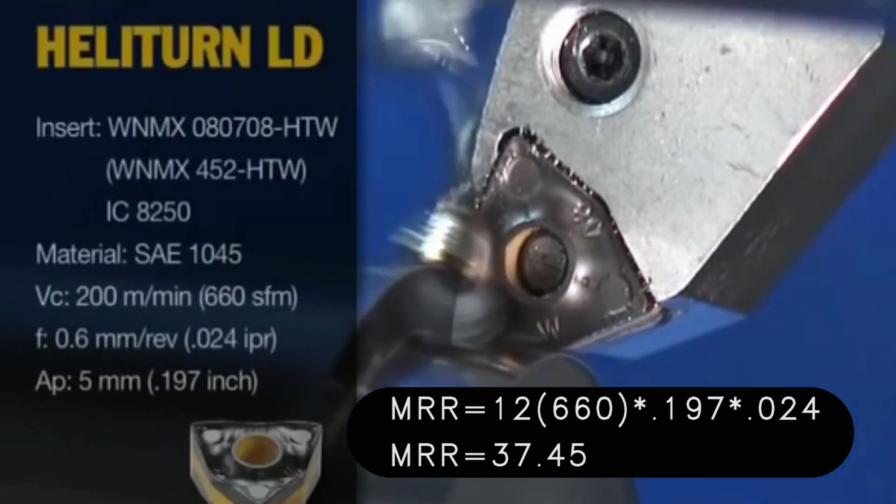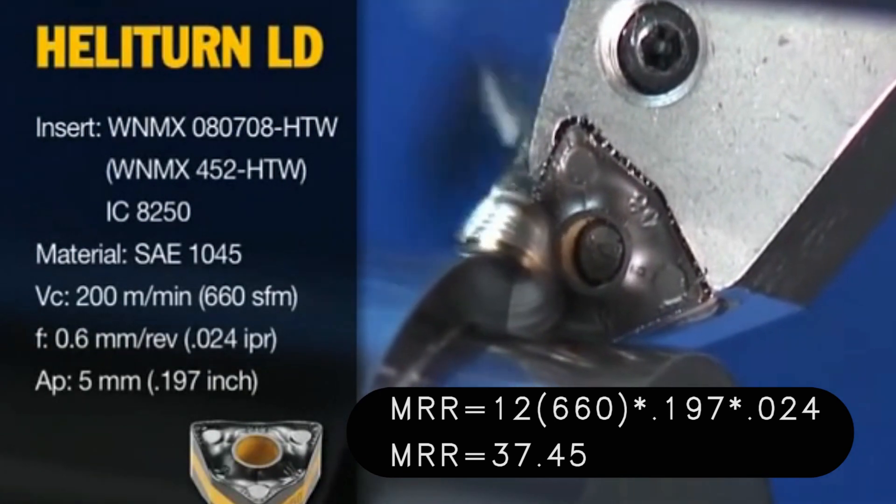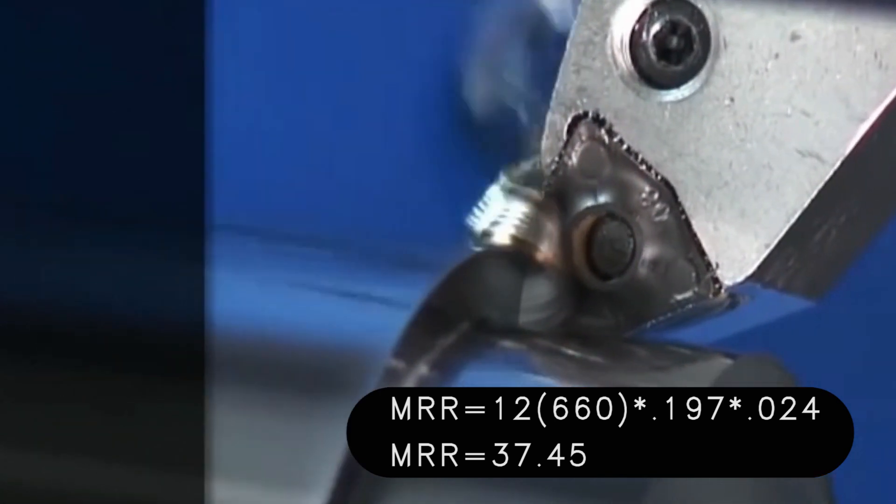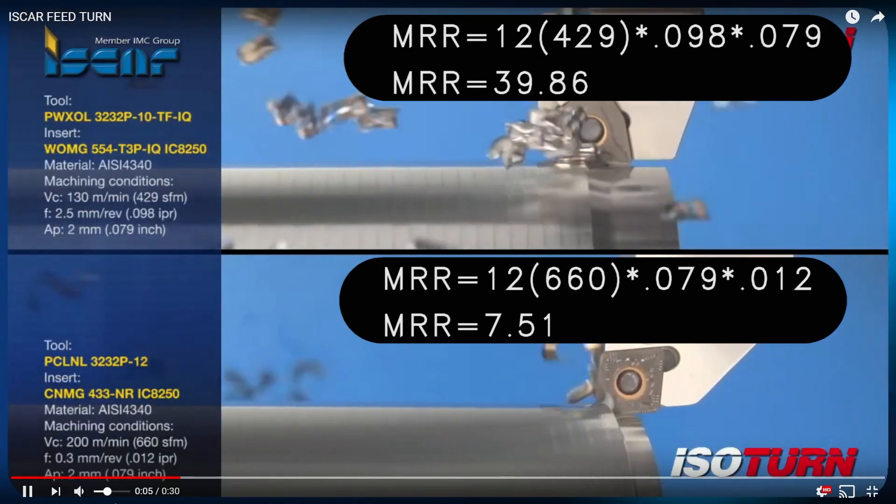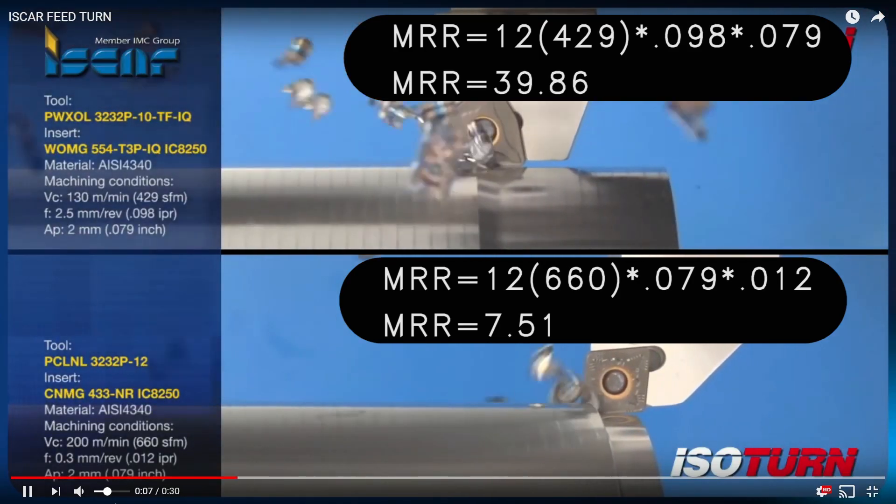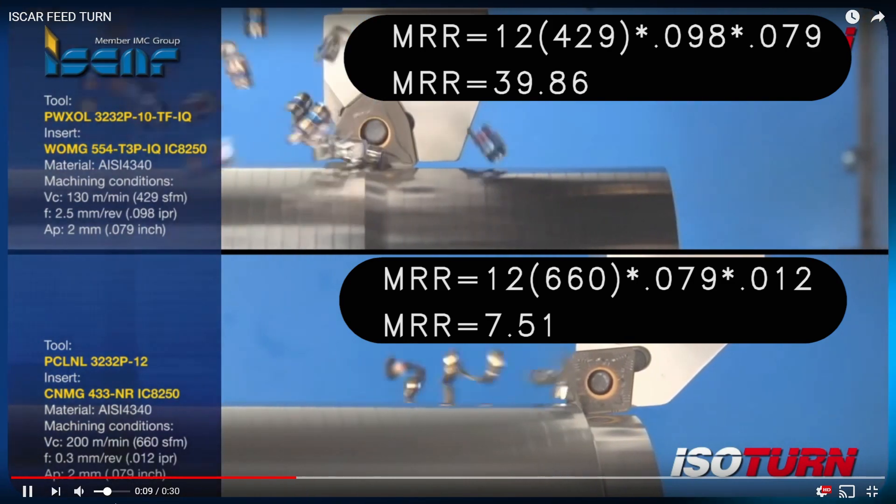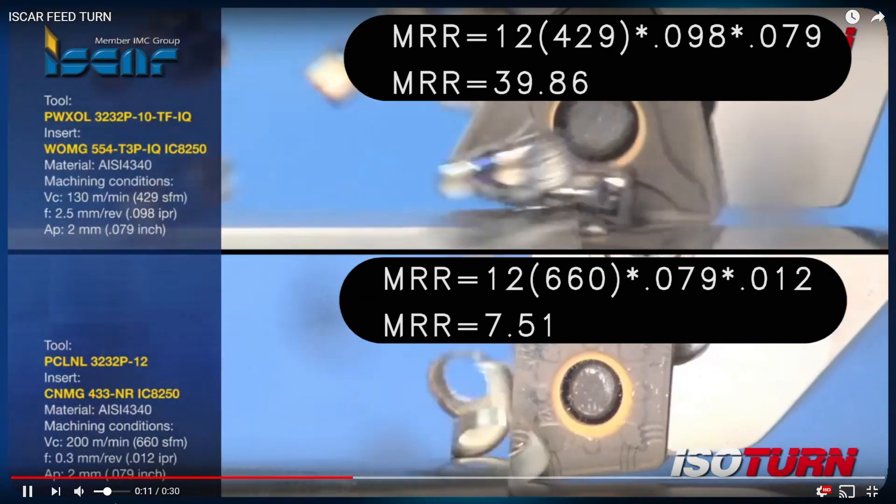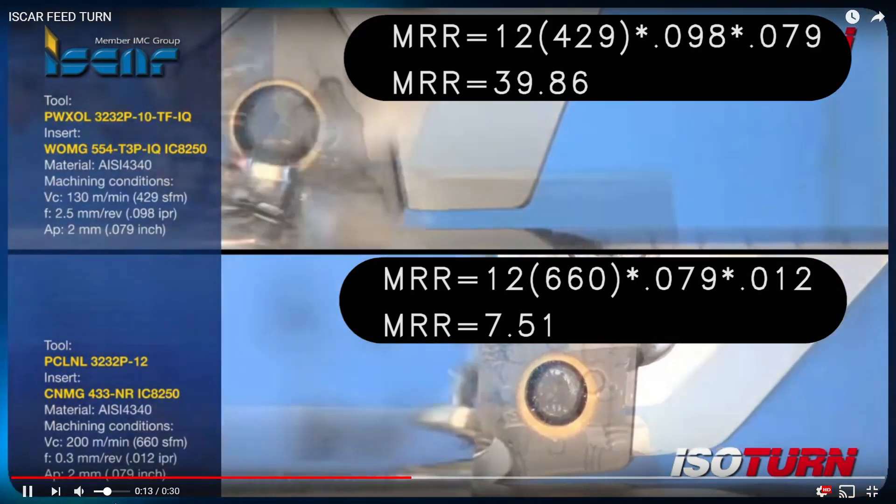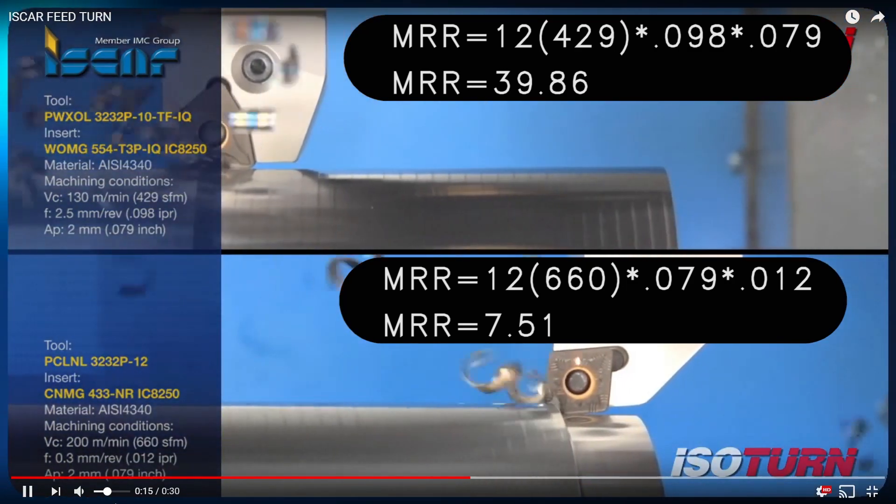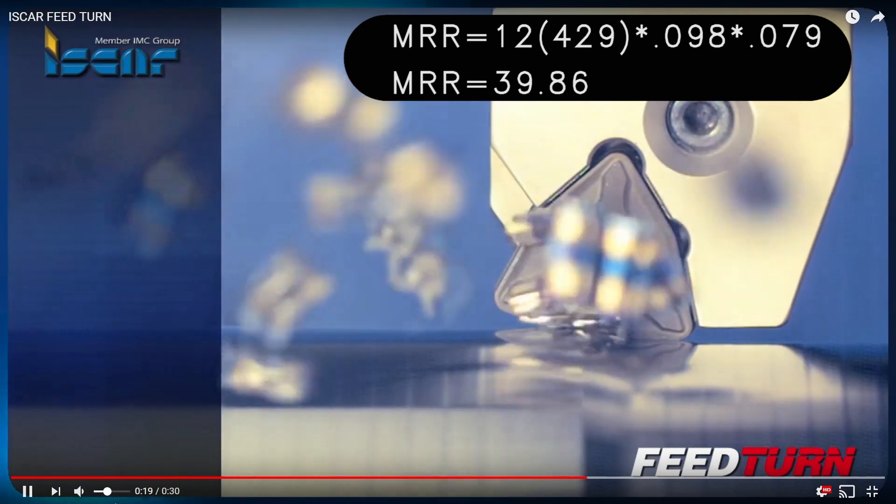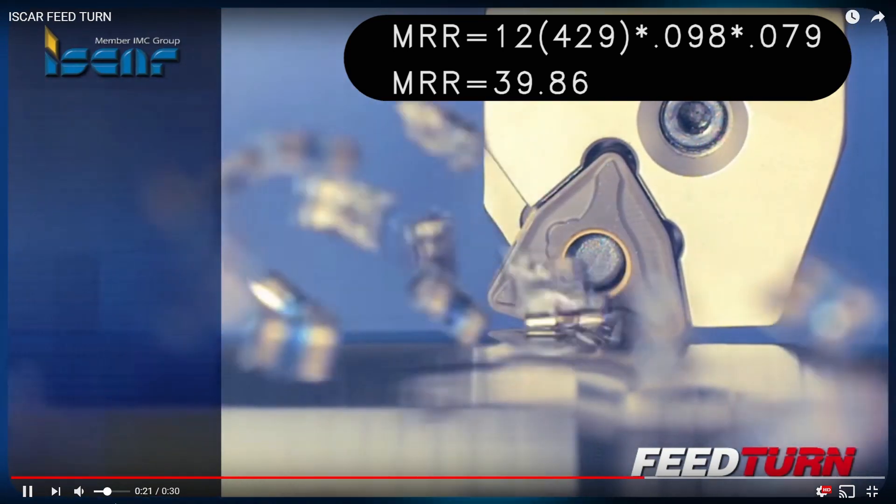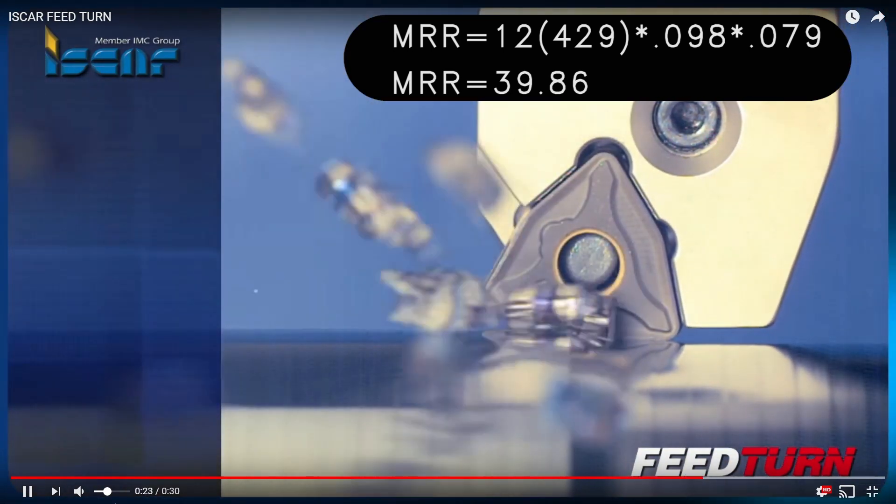Now this next one here, they're comparing this top style, which I think is a really good approach there with that slant angle, with a traditional CNMG at the bottom. Now their rates on that CNMG on the bottom are a little conservative.